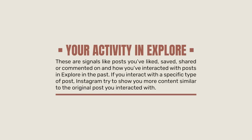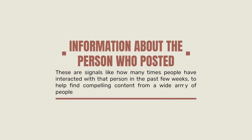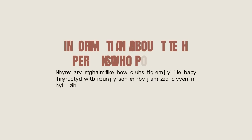Next, they look at your activity in Explore in the past — what type of content you've liked, saved, shared, or commented on in Explore — and if you interact with a specific type of post, they try to show you more content similar to that original post. Third, your history of interacting with the person who posted: even if you don't follow them, if you've interacted with them before, that gives Instagram a sense of how likely you are to be interested in their content. Finally, information about the person who posted — who they are, what kind of content they post, and even how many times people from across Instagram have interacted with that person in the past few weeks. A lot of interactions signals compelling content worth pushing to Explore.